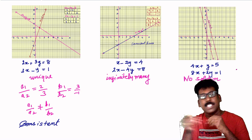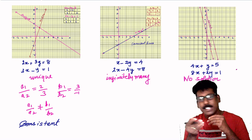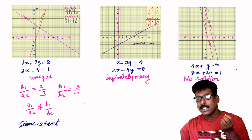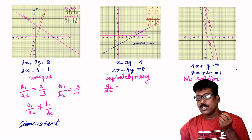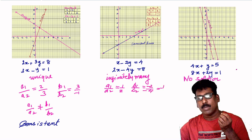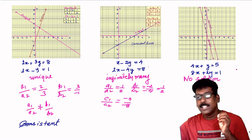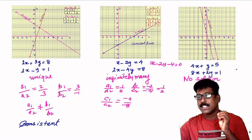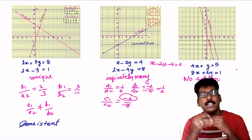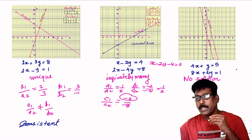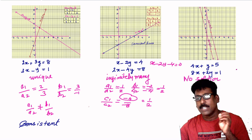In the second case of infinitely many solutions, the lines are coincident. Here a1 by a2 equals b1 by b2 equals negative 2 by negative 4, which is 1 by 2. And c1 by c2 equals negative 4 by negative 8, which is also 1 by 2. Note that c1 is negative 4 because writing x minus 2y equal to 4 in standard form gives x minus 2y minus 4 equal to 0. So a1 by a2 equals b1 by b2 equals c1 by c2.